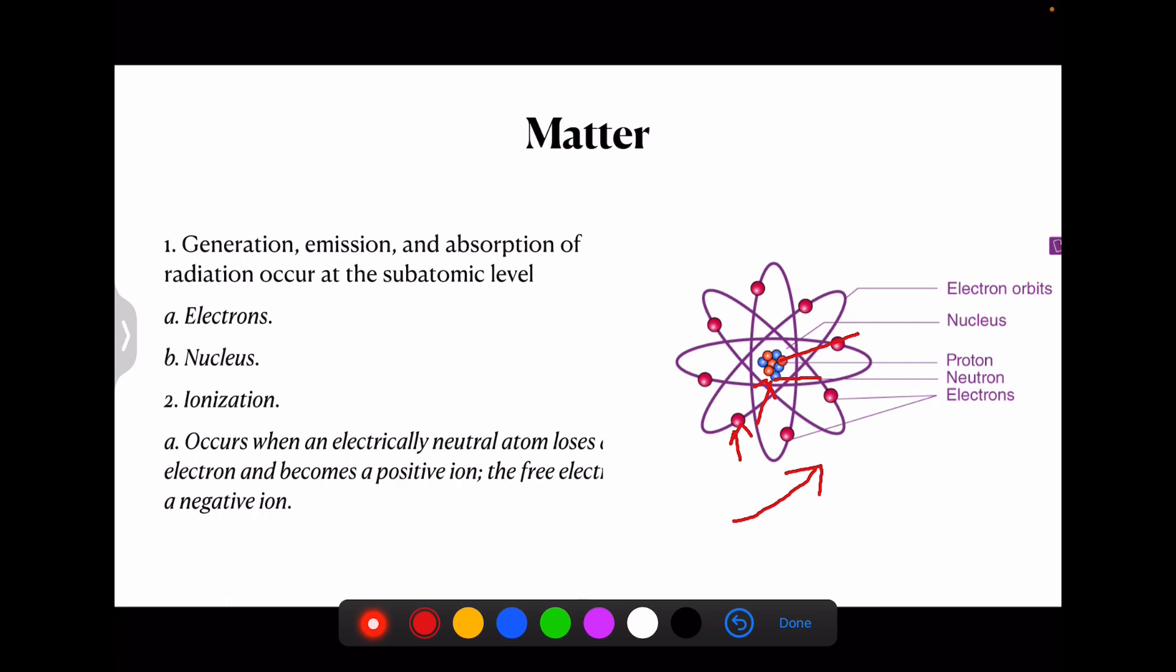Now there is a principle of ionization. This occurs when a neutral atom loses an electron - that is an electron moves out of its orbit and becomes a positive ion and the free electron is a negative ion.